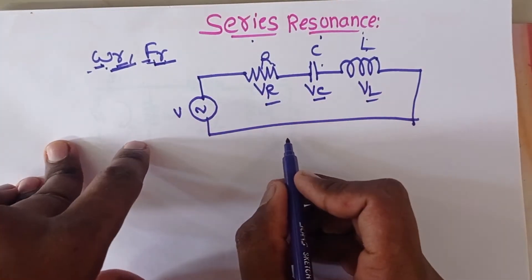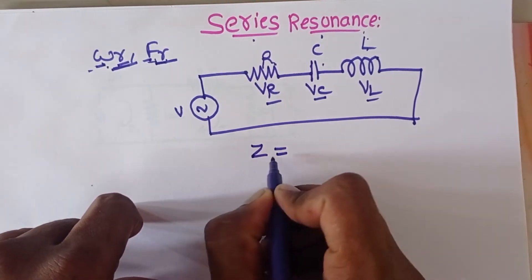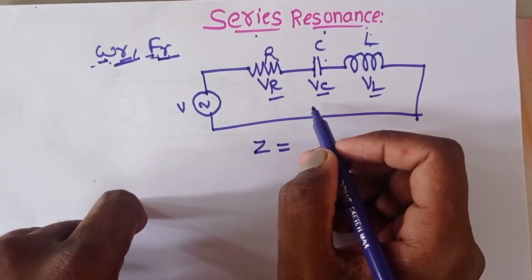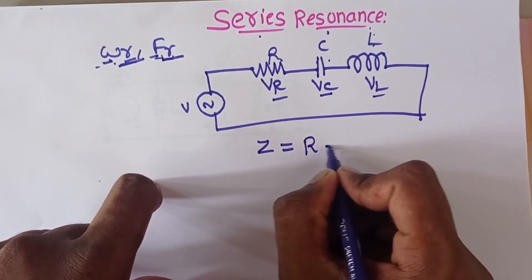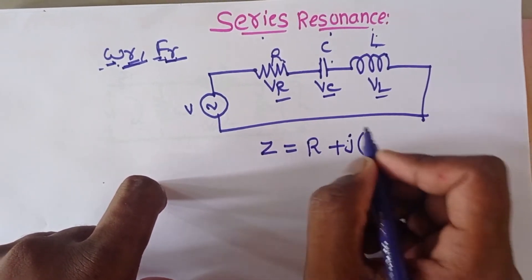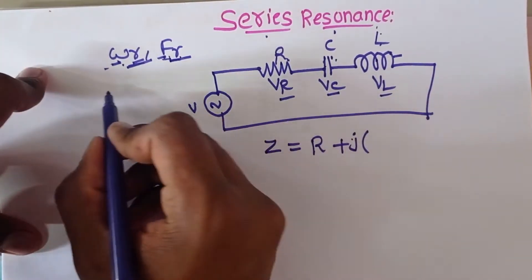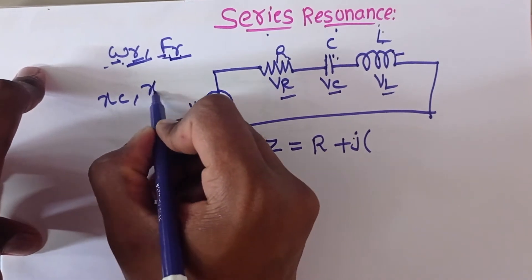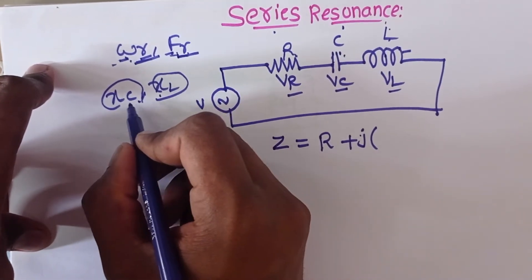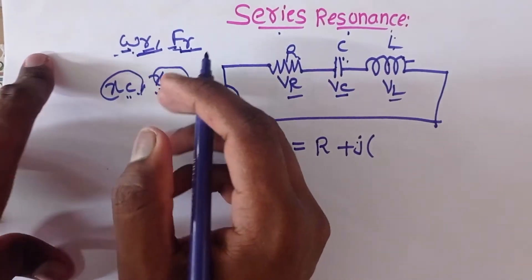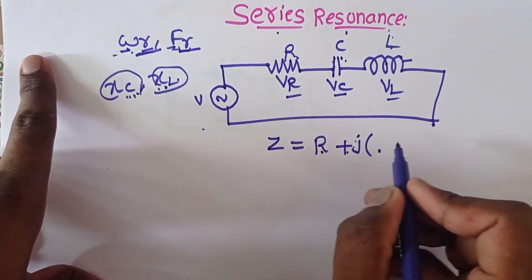Now I will show how to find series resonance frequency. First, let's consider the impedance Z. Impedance is nothing but the combination of resistance and reactance. In this series RLC circuit, R is the resistance. We have two reactances: capacitive reactance XC and inductive reactance XL. The total reactance is the difference between the two reactances, XL minus XC.